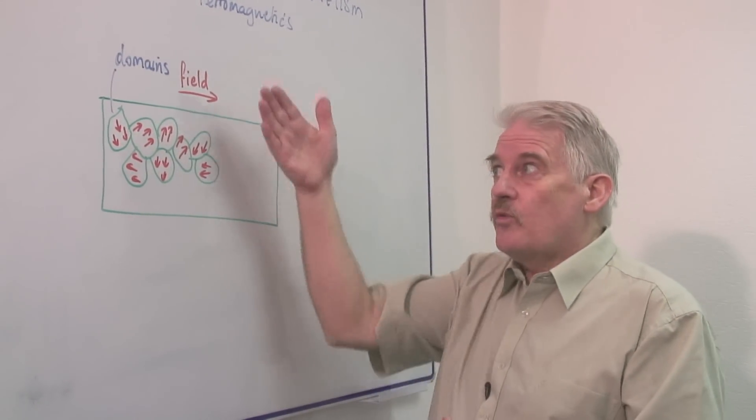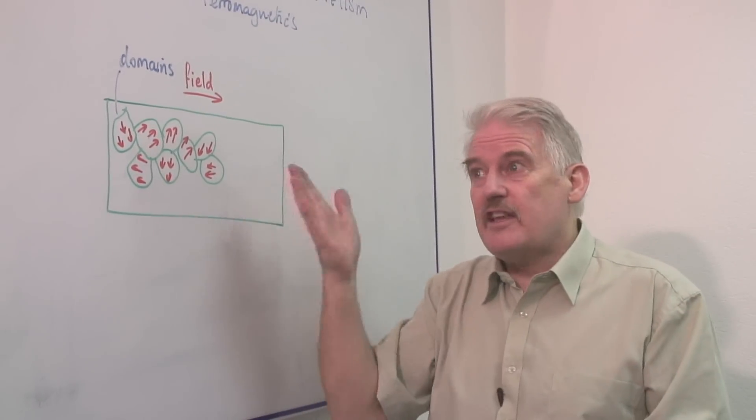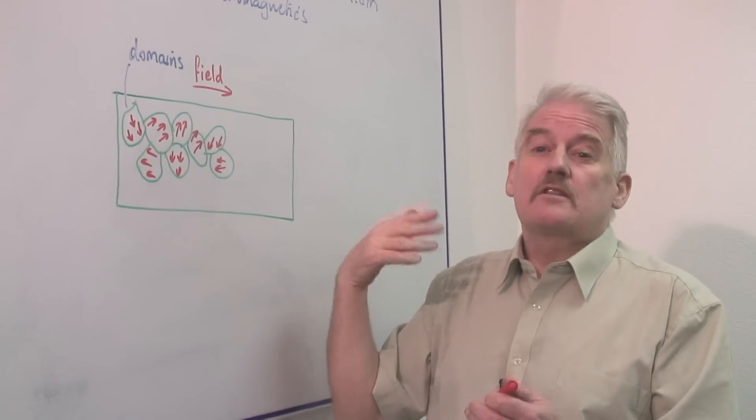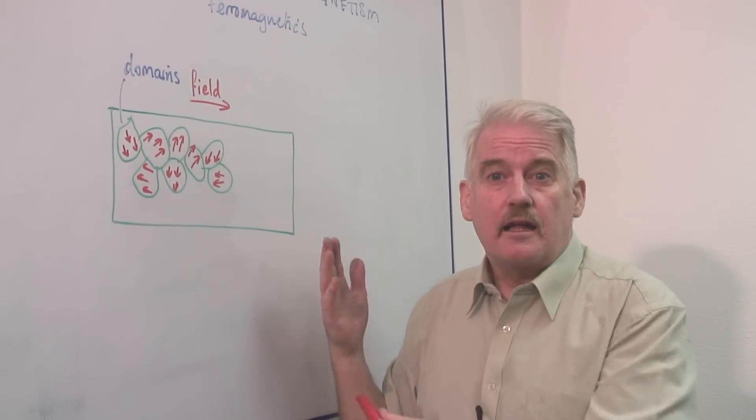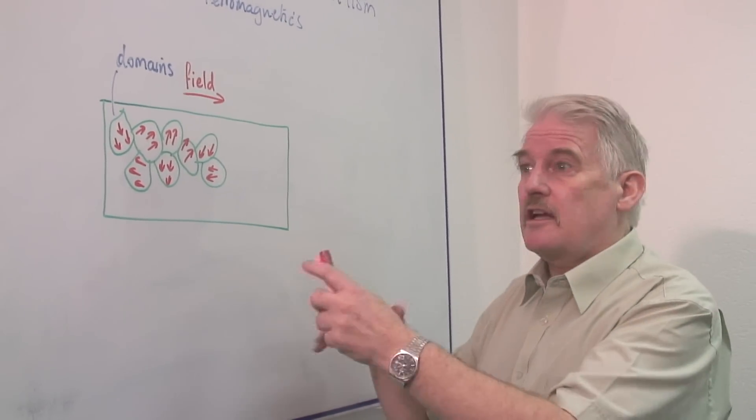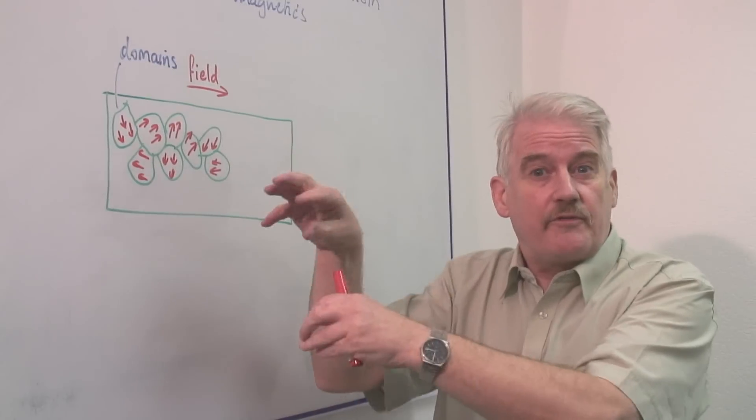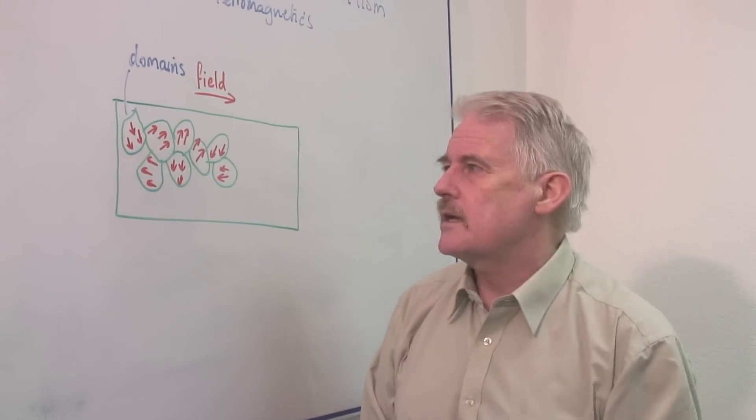And this effect when you take away the field does not necessarily disappear. In some materials like steel it actually remains like that. In other materials like soft iron it gradually reverts or suddenly reverts. It depends on the material itself.